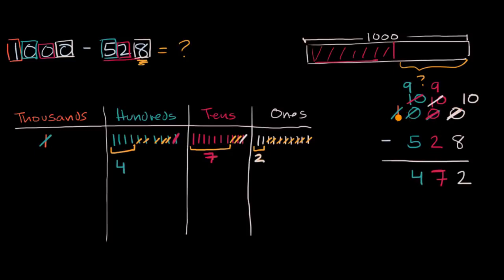With the standard method it sometimes seems like magic of how we're regrouping things. But all we're doing is we're taking that thousand and saying hey that's ten hundreds. And then we take one of those hundreds and we say hey that's ten tens. And then we take one of those tens and we say that's ten ones. And then we are able to subtract.